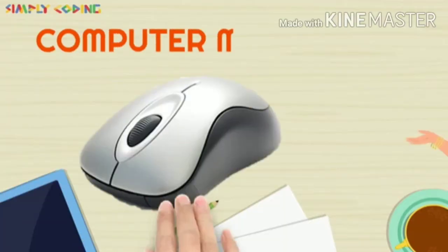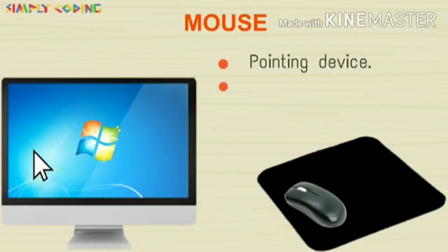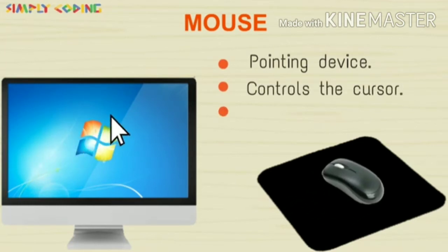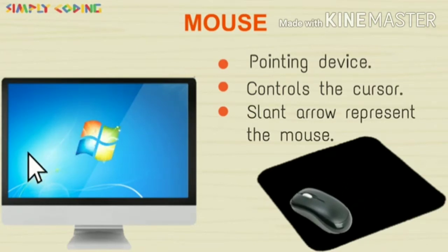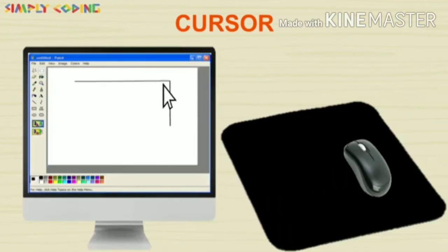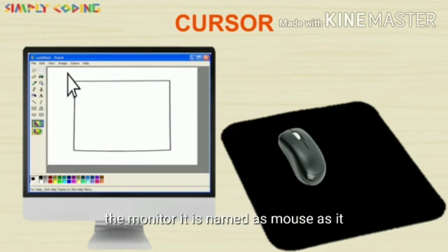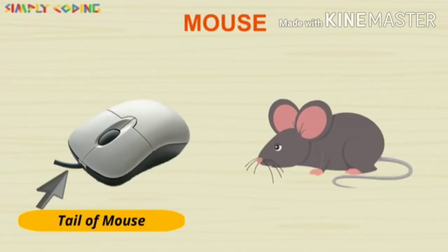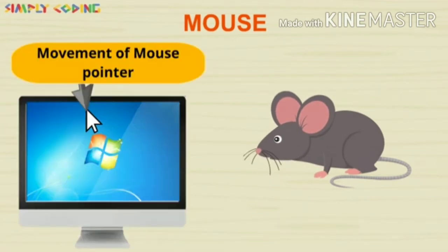So let's start our chapter. A mouse is a pointing device. It controls the cursor or mouse pointer on the monitor, and a slant arrow represents the mouse pointer on your monitor. This cursor on the screen helps us to draw pictures and point and select objects on the monitor. It is called a mouse cursor.